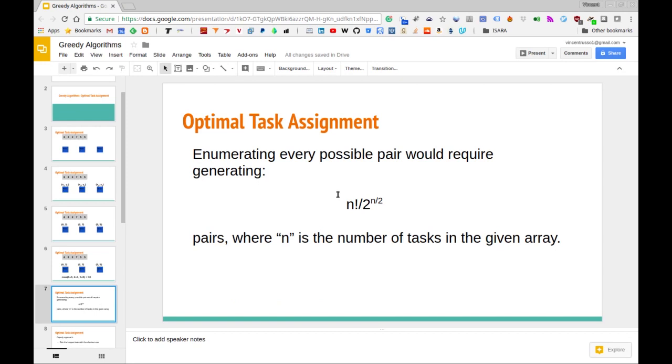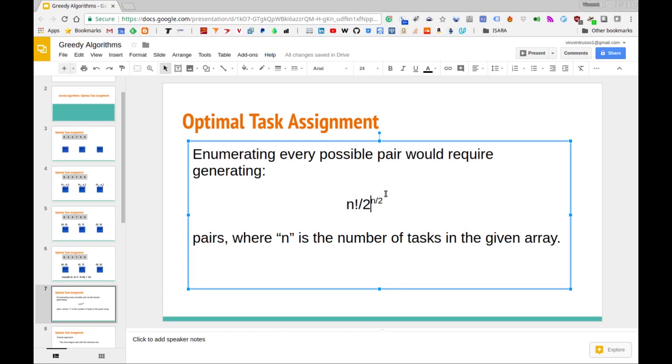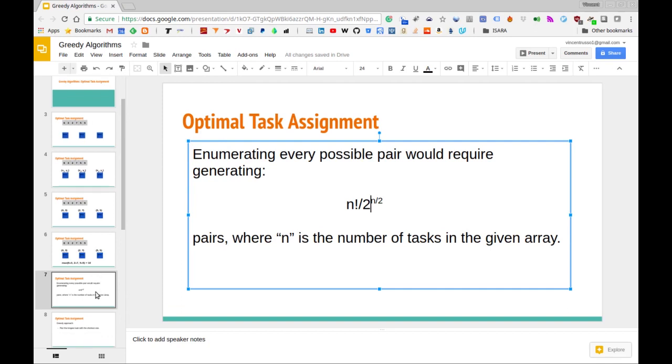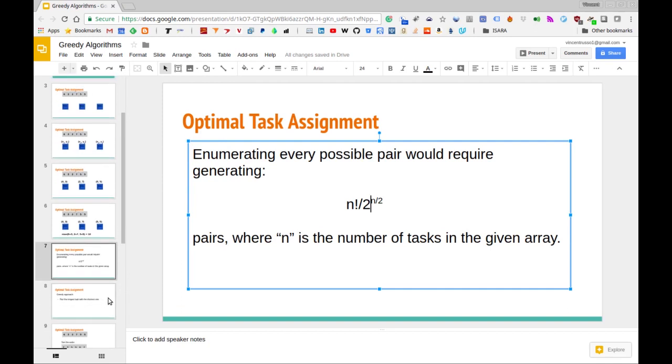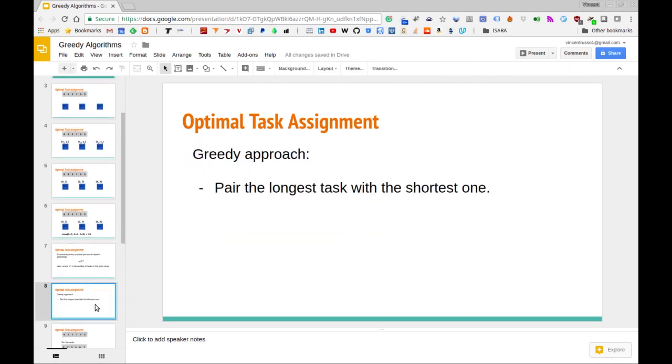And it's worth pointing out that if we enumerate all the possible pairs for a given list - let's say our array is of size n - then we need to generate n factorial over two to the n over two pairs. So that's a bit much, it doesn't scale too well. We need to think of another approach. The other approach is we're going to use a greedy approach. The one that happens to work in this case is pairing the longest task with the shortest one, and we just keep doing this until we run out of tasks.